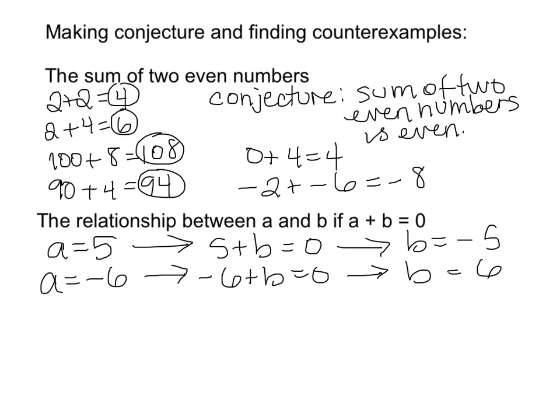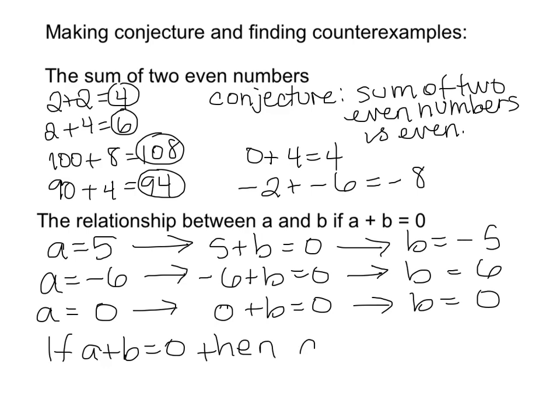I wonder if this holds in general. Let me try this special case of when A is zero. Then I'd have zero plus B equals zero, which means that B would also have to equal zero. And it looks like in general, the numbers have to be opposites, one positive, one negative, but have the same absolute value, or the same magnitude. And that seems to hold. Zero is kind of a funny case, because zero is its own opposite, but it looks like it holds in general. So my conjecture might be, if A plus B equals zero, then A equals negative B, or A and B are opposites.